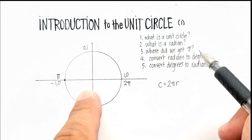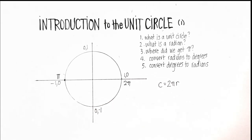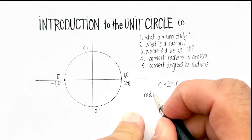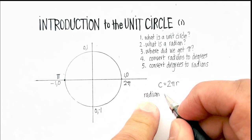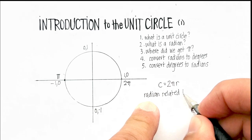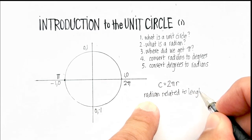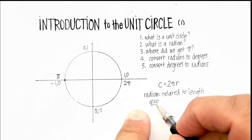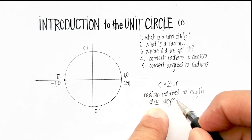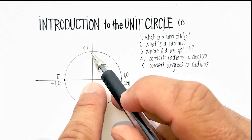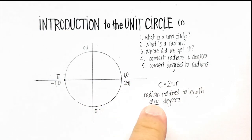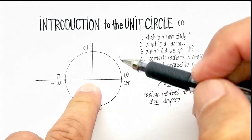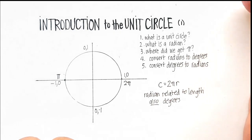A radian is related to the length around the outer edge of the circle, but it's also related to the number of degrees in a circle, because each of these points along the way has a number of degrees associated with it. Let me show you how to get from radians to degrees. First, we need to go back to our unit circle and mark some more important points.